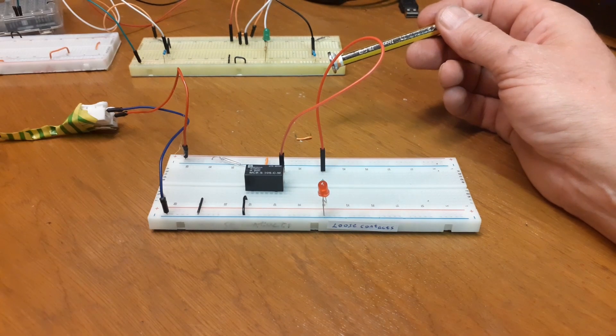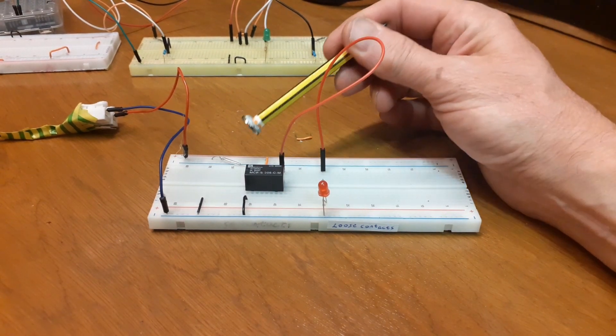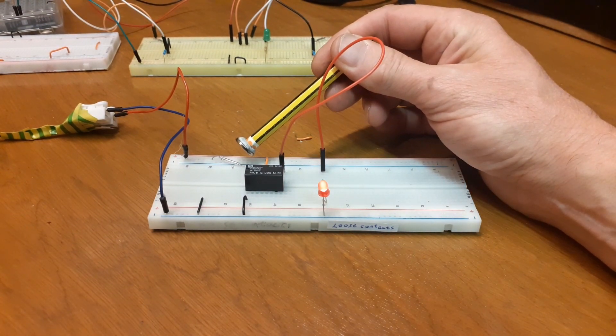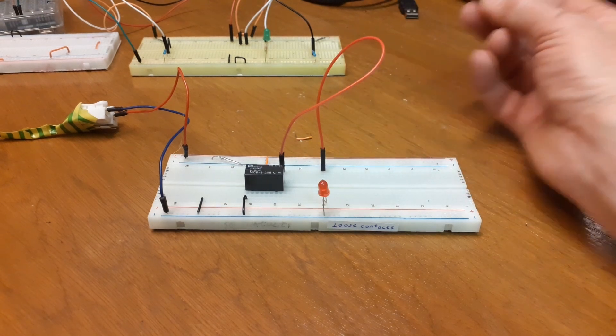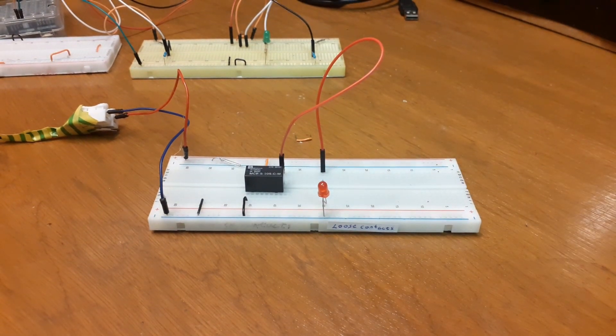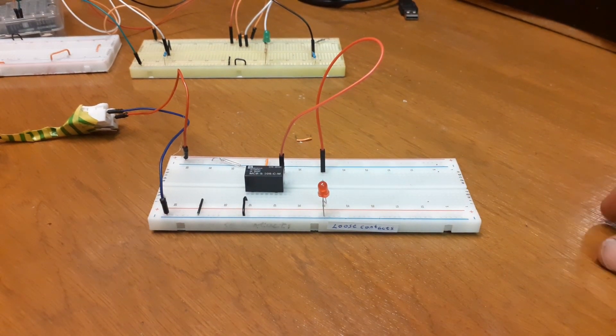With a reed switch it's only on when you have the magnet in contact. So what happens if we want to turn something on and have it remain on and then switch off again using reed switches? We'll look at that shortly.